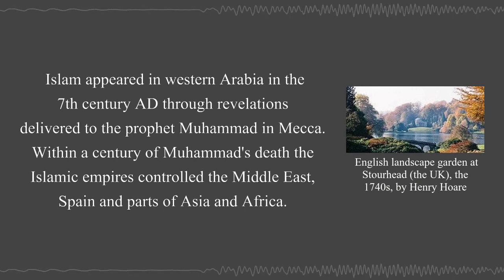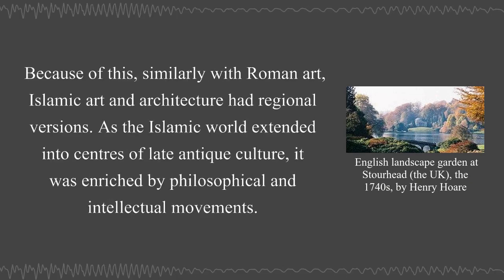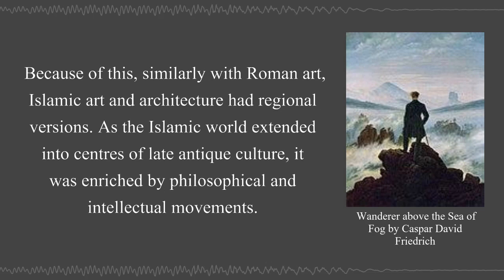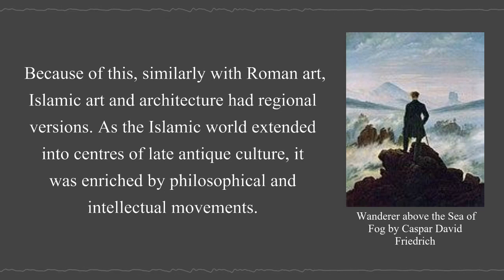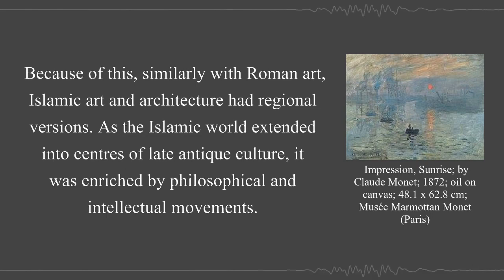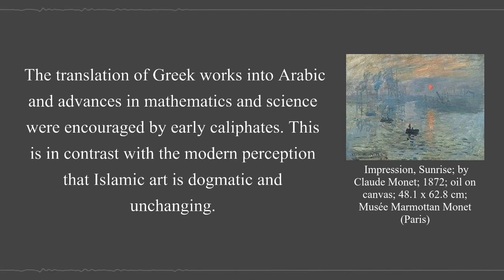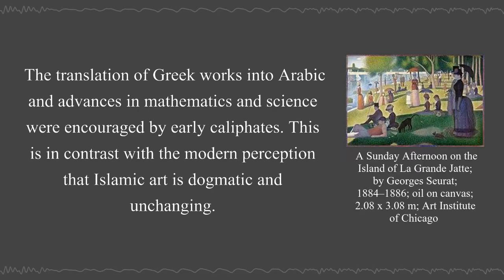Within a century of Muhammad's death, the Islamic empires controlled the Middle East, Spain, and parts of Asia and Africa. Similarly with Roman art, Islamic art and architecture had regional versions. As the Islamic world extended into centers of late antique culture, it was enriched by philosophical and intellectual movements. The translation of Greek works into Arabic and advances in mathematics and science were encouraged by early caliphates.